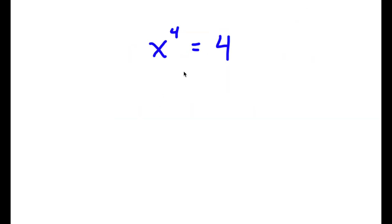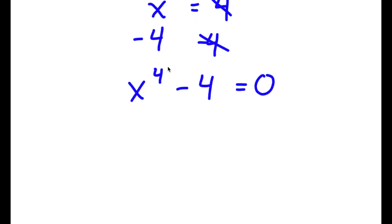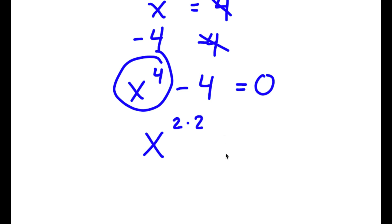In this problem, I have x to the power of 4 is equal to 4. To solve this, I'm going to first start by subtracting 4 on both sides. So these two cancel out and now I have x to the power of 4 minus 4 is equal to 0. I'm going to rewrite x to the power of 4 as x to the power of 2 times 2, and this minus 4 is the same thing as 2 squared, is equal to 0.